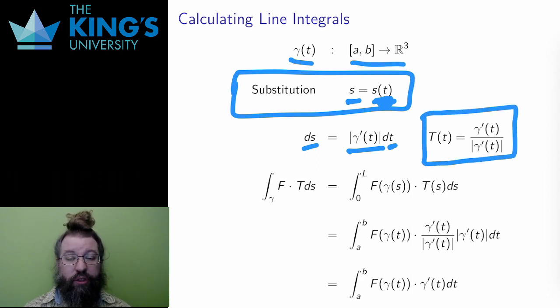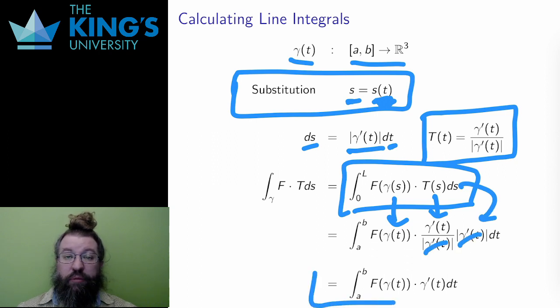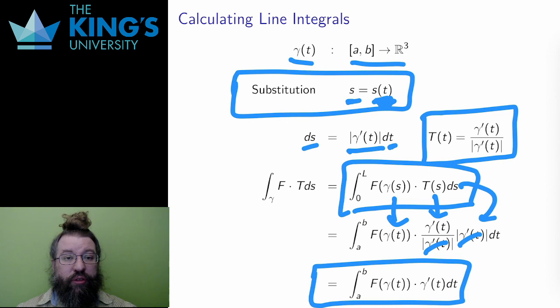Here is the definition of the line integral. I replace γ(s) with γ(t) in the new parametrization. I replace the unit tangent and the ds term, and very happily, the length of the tangent disappears, and I get the integral from a to b, the bounds of t in that parametrization, of the field evaluated along the curve dot the tangent to the curve. This is how I will actually calculate the line integral.